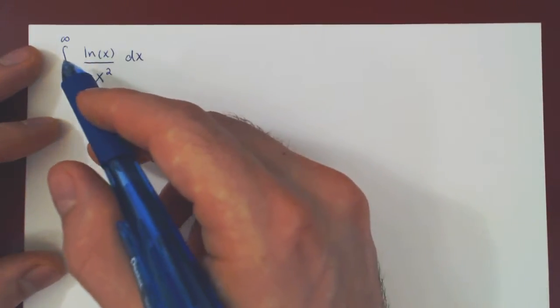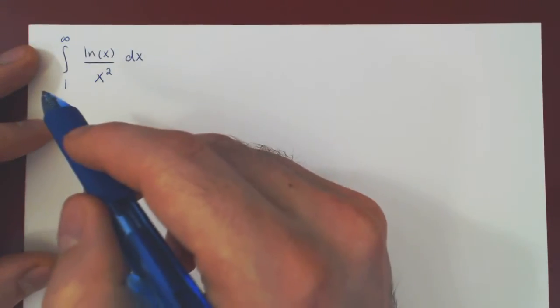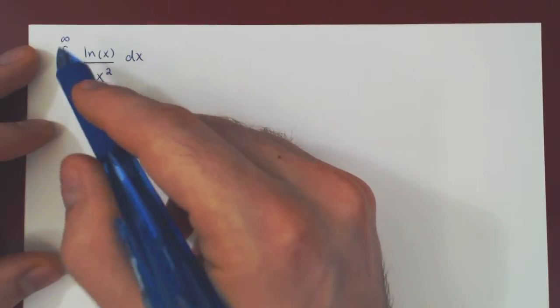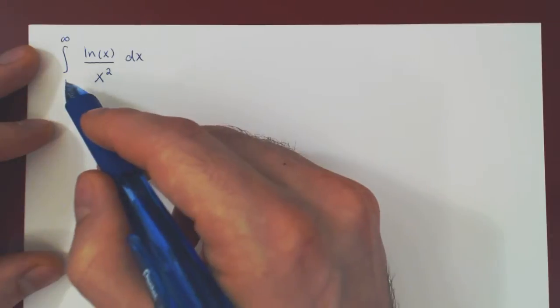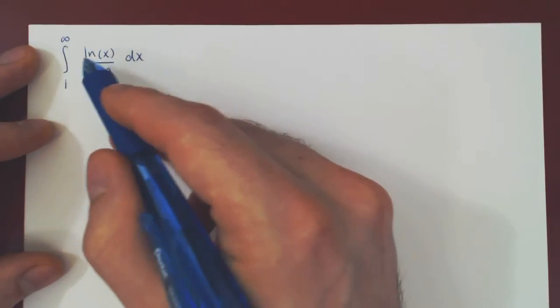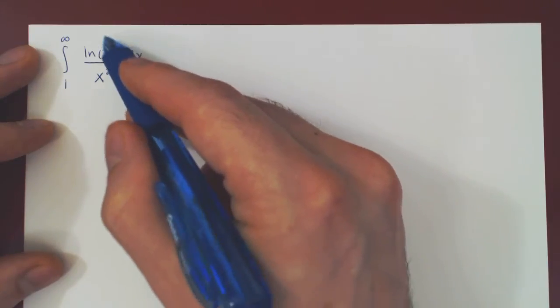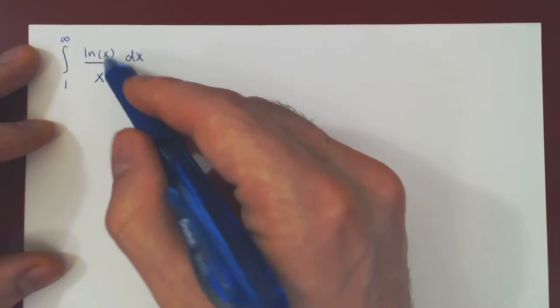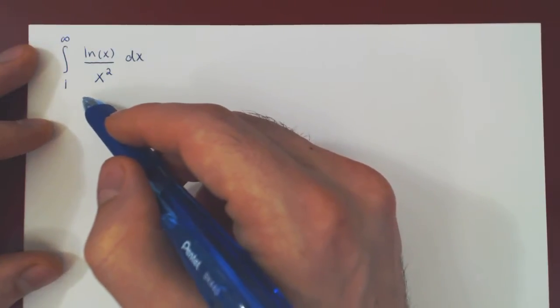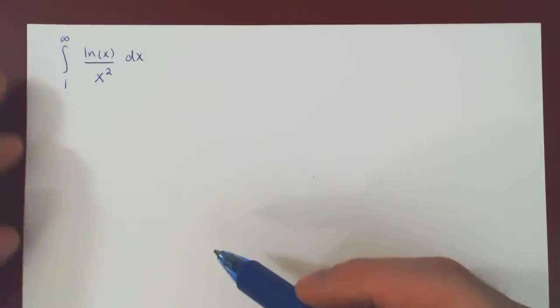Okay, so in this video we will evaluate, if possible, this definite integral that is an improper integral of type 1 as we have an infinite range of integration. Since we go from 1 to infinity and over both of these intervals, ln and x squared are both continuous and x squared is not 0, ln of x over x squared is continuous. Both are also positive, so we can look at the geometry behind this improper integral.